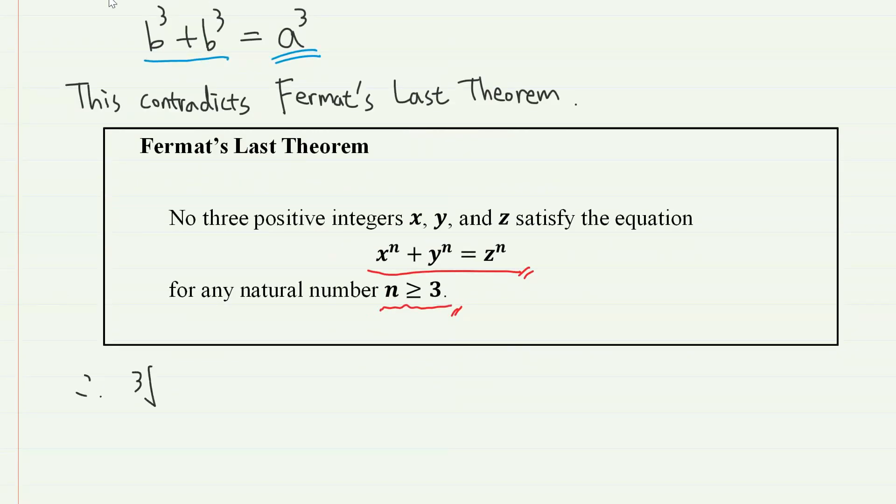Therefore, the cube root of 2 is irrational. So here we have a legit, perfectly logical proof of the cube root of 2 being an irrational number.